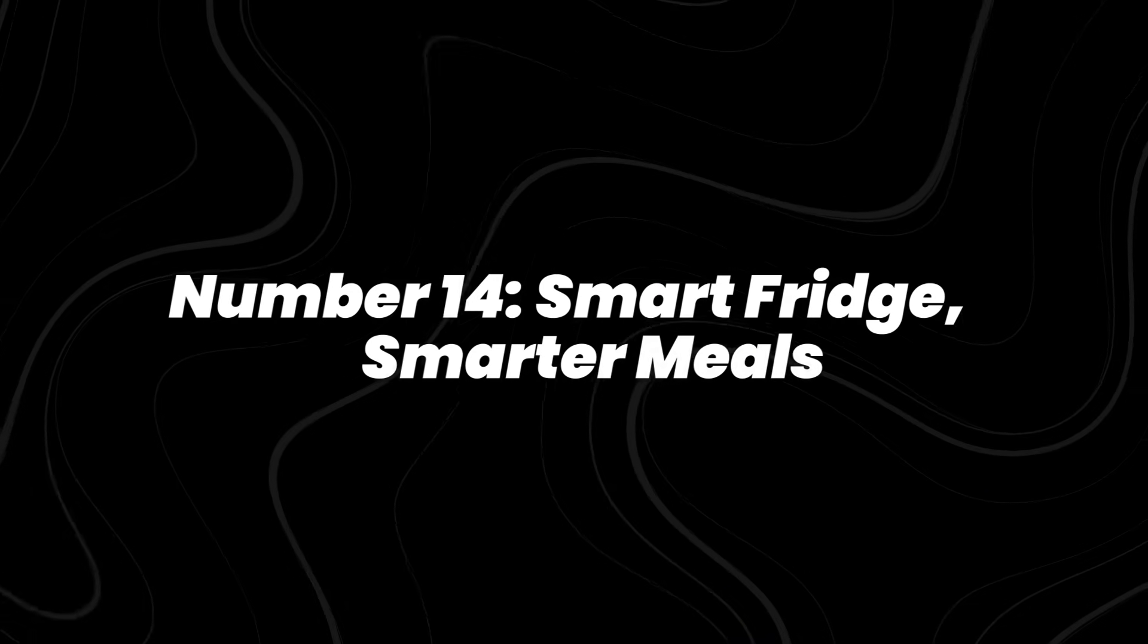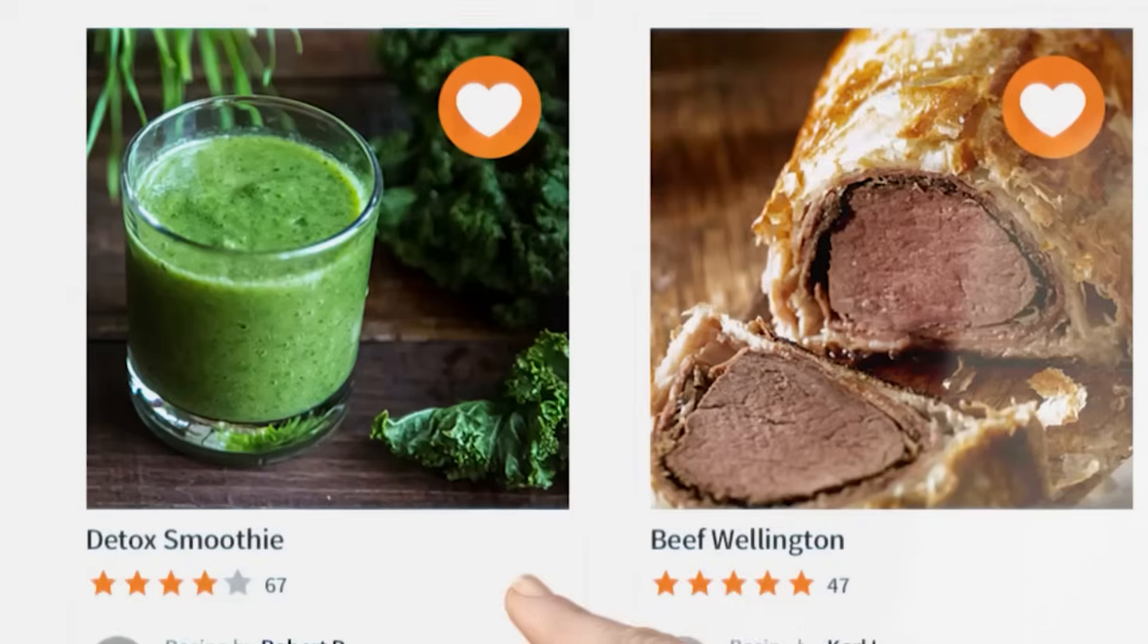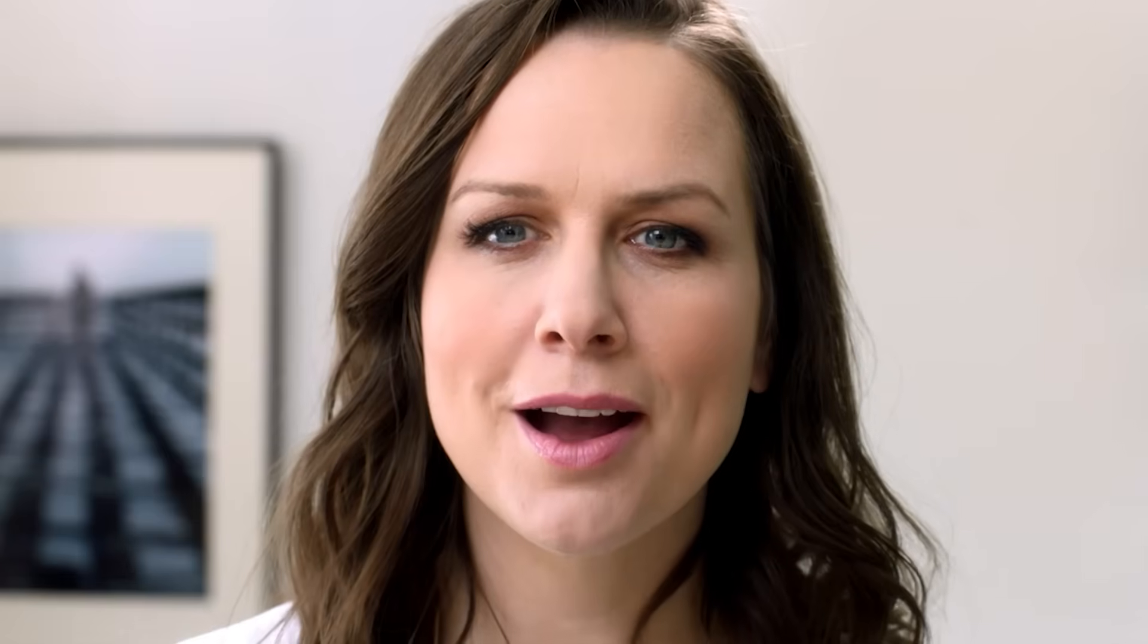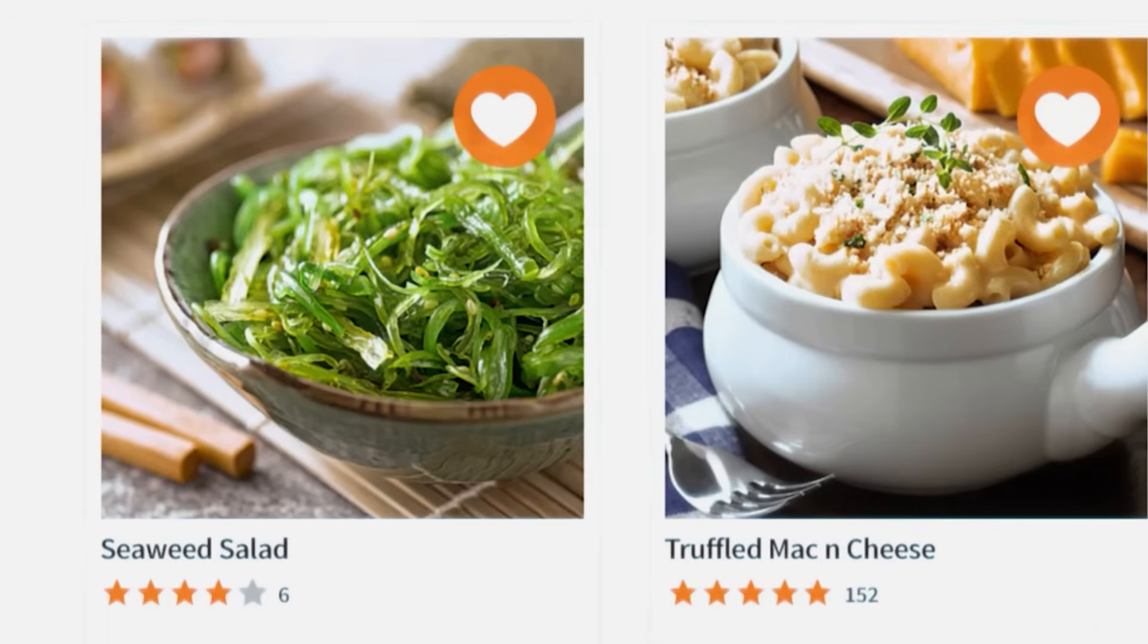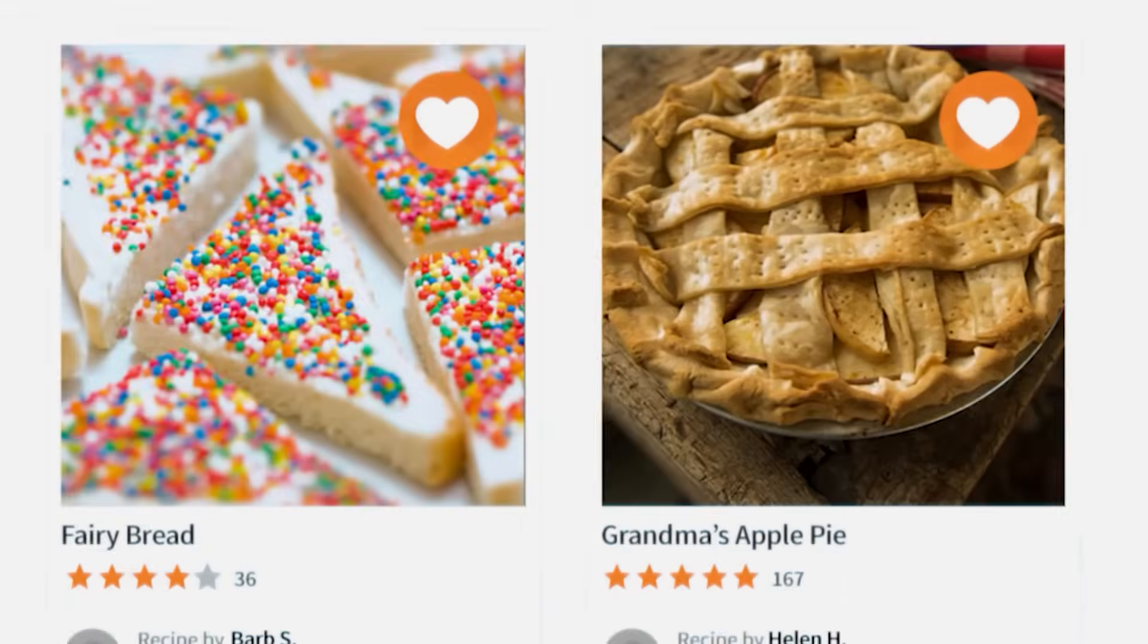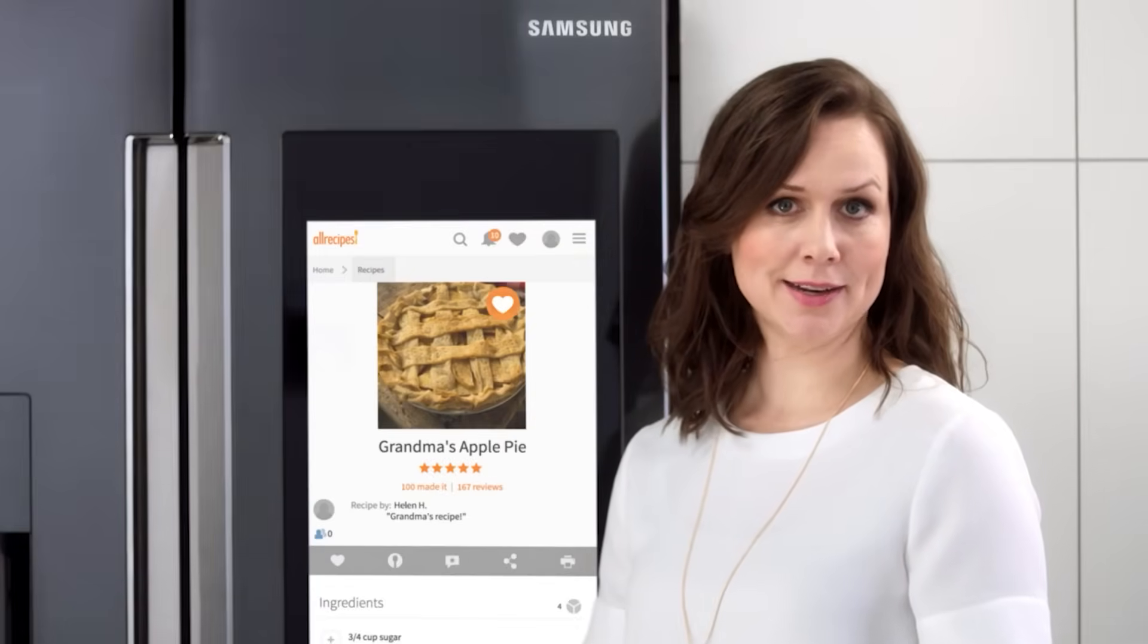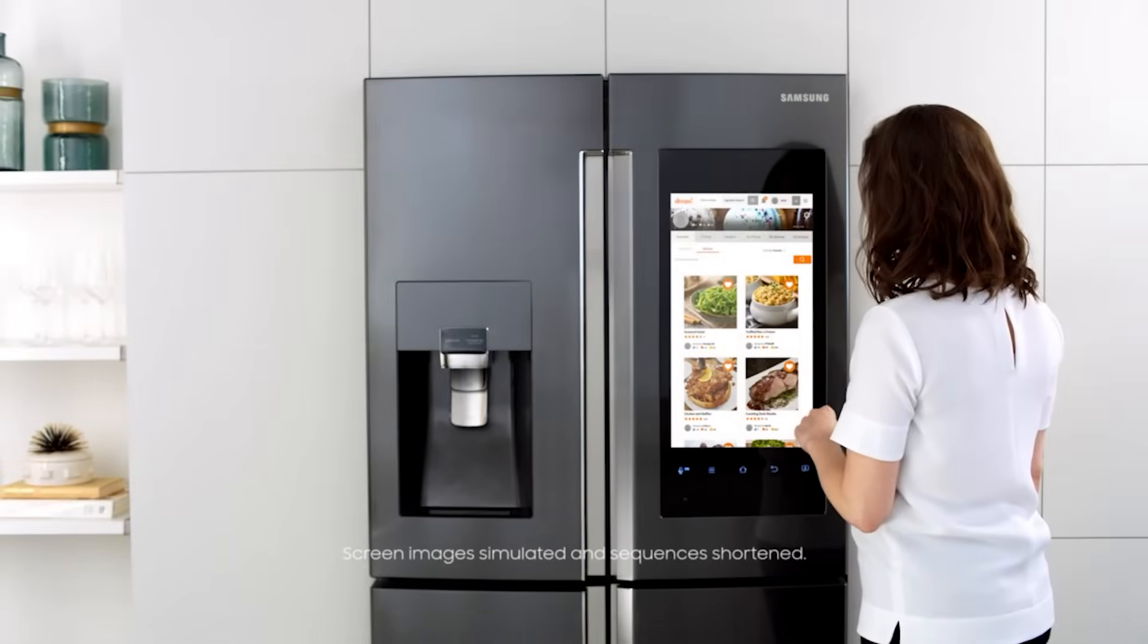Number 14, Smart Fridge Smarter Meals. Imagine opening your fridge, taking one photo, and getting a full meal plan. Samsung's Food AI and LG's ThinQ Recipe already do this, recognizing ingredients, checking expiration dates, and suggesting dishes within your calorie and budget range.